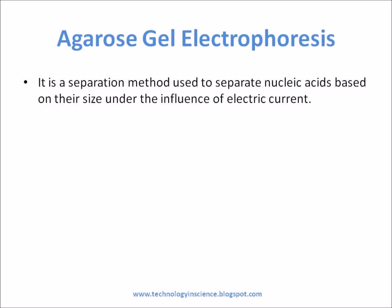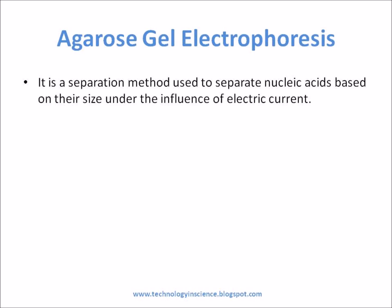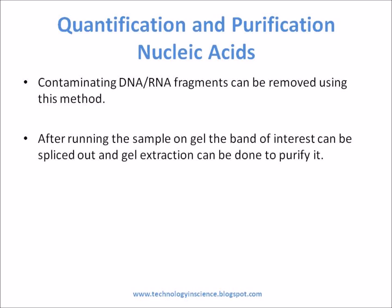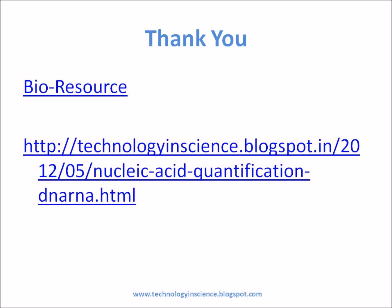Agarose gel electrophoresis is a separation method used to separate nucleic acids based on their size under the influence of electric current. Since nucleic acids are negatively charged, on applying an electric field they move from cathode to anode. A suitable gel concentration can be selected to act as a sieve to separate nucleic acids based on size. Purity of the sample can be analyzed using this method, and contaminating DNA or RNA fragments can sometimes be removed — the band of interest can be spliced out and gel extraction performed to purify it.